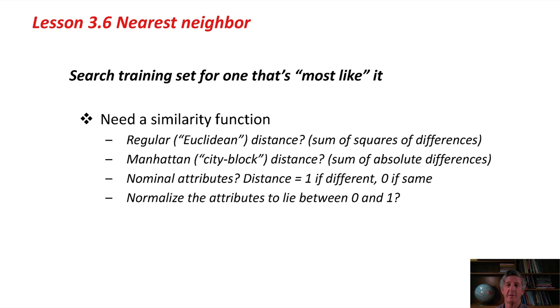The trick, of course, is what do we mean by most like? We need a similarity function. Conventionally, people use the regular distance function, the Euclidean distance, which is the sum of the squares of the differences. It's the differences between the attributes. It's the square root of the sum of the squares, but since we're just comparing two distances, we don't need to take the square root. Or you might use what's called the Manhattan or city block distance, which is the sum of the absolute differences between the attribute values.